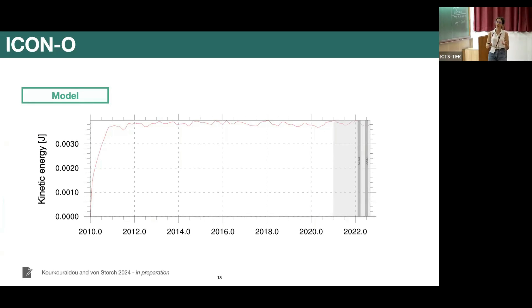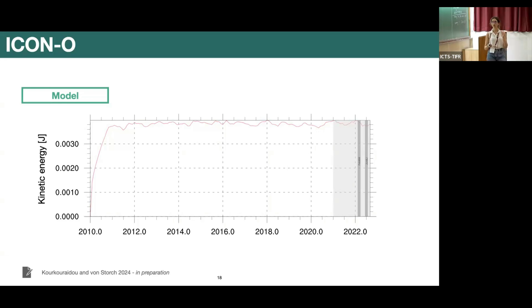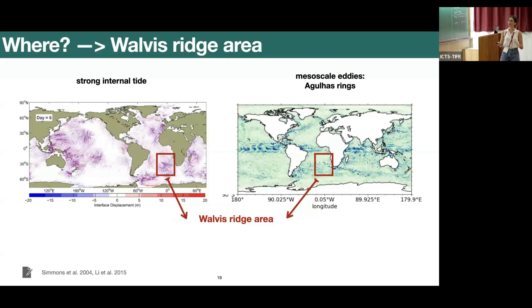Let's begin with the model. What you see here is a time series of the kinetic energy of our run. We have a quite long spin-up of more than ten years until we have a stationary eddy field. The gray area indicates where we switch on the tides for around one and a half years. The next two gray bars indicate periods where we rerun the model with the same setup but very high frequency one-hour output, covering two different seasons: February–March and June–July of the same year. I will only show results from the first season.